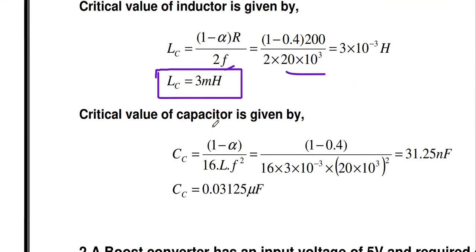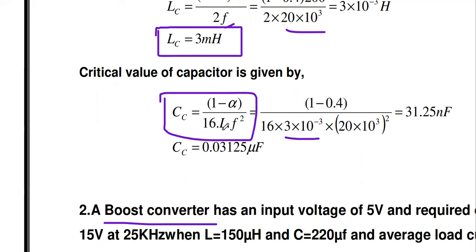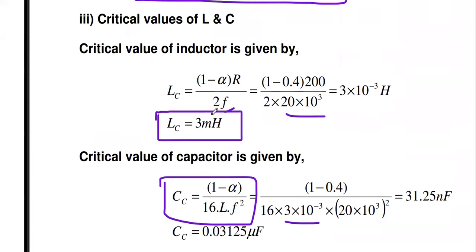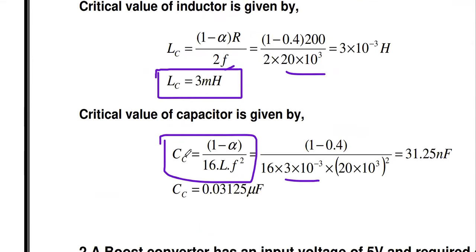For the critical value of capacitor: Cc = (1 − α) / (16 × Lc × F²). Substituting: (1 − 0.4) / (16 × 3 × 10⁻³ × (20 × 10³)²). Note: use the critical inductance value (3 mH) in this formula, not the filter inductance. The answer is 31.25 nanofarad.